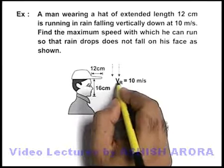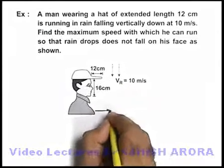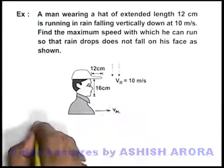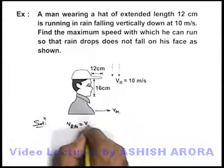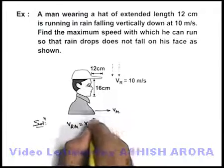Rain is falling vertically down. Say if the man is running with the velocity v_m, here in solution we can first find velocity of rain with respect to man. It'll be v_r minus v_m.